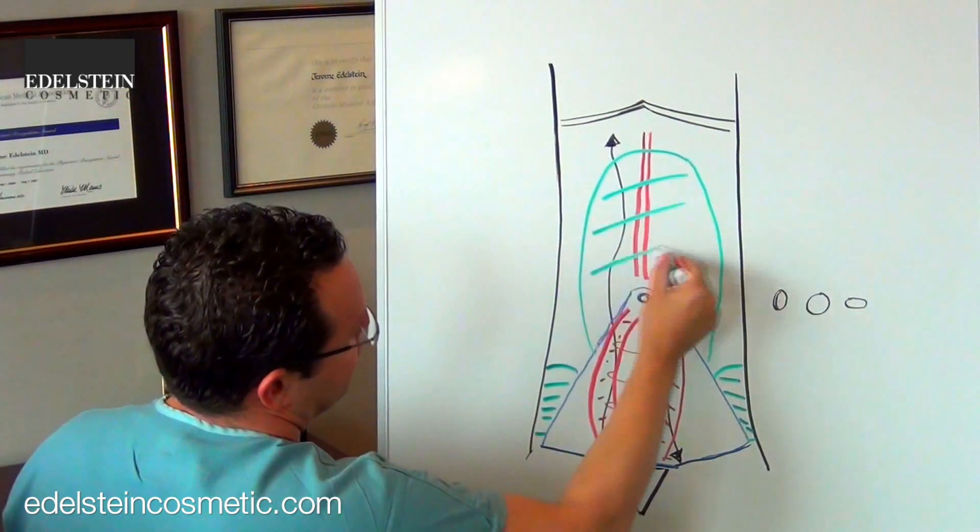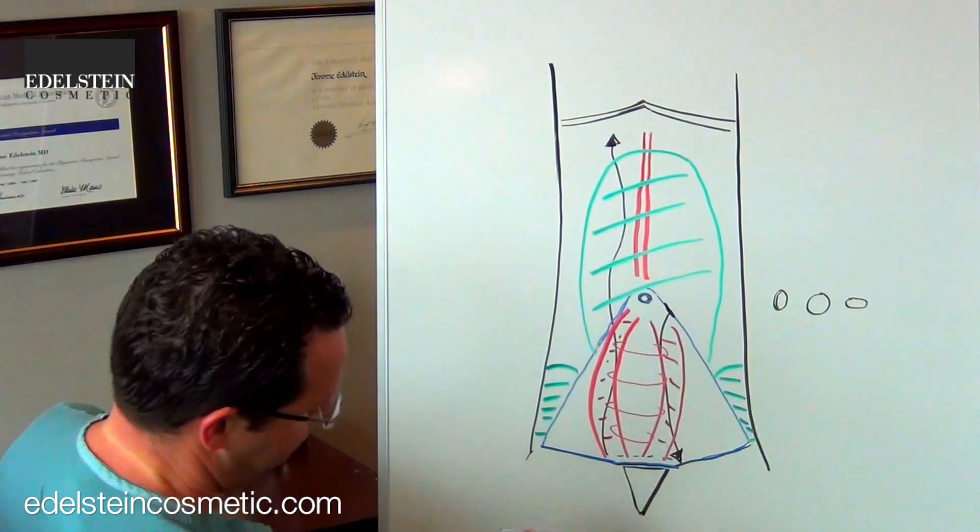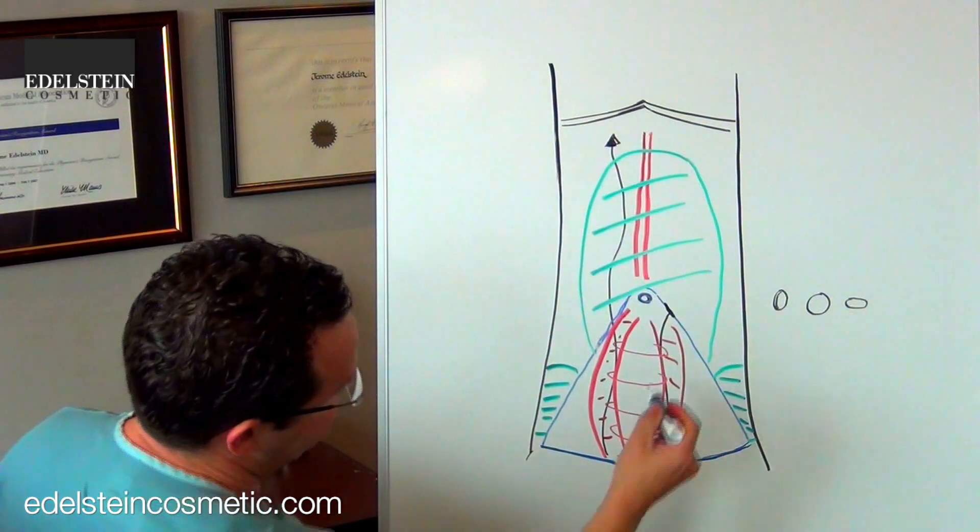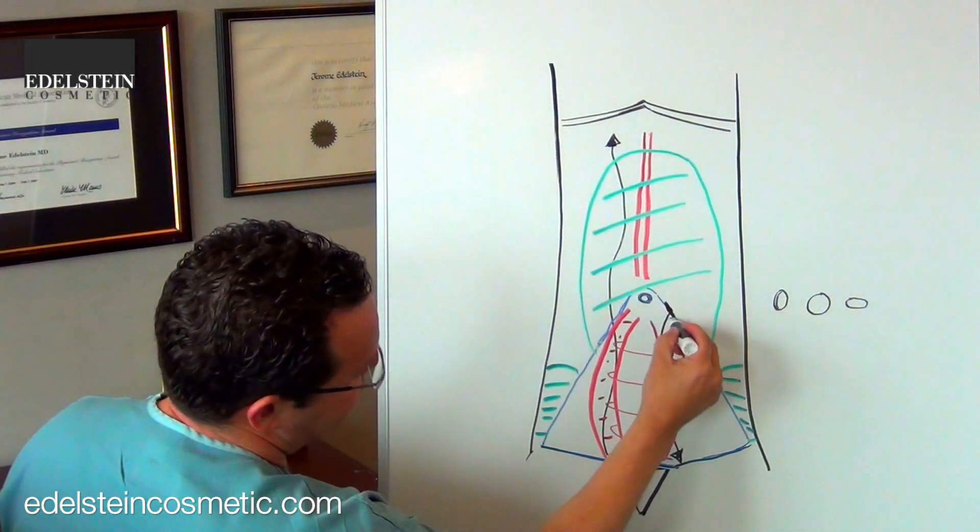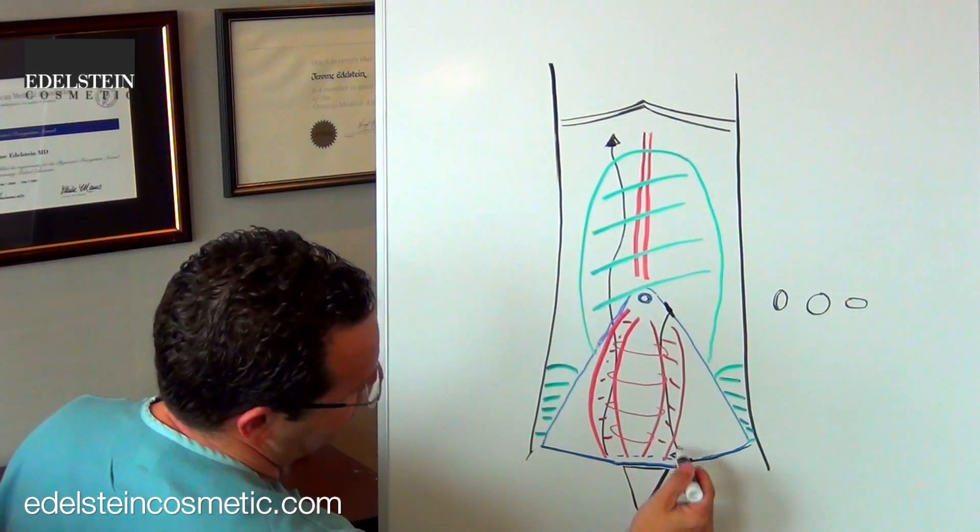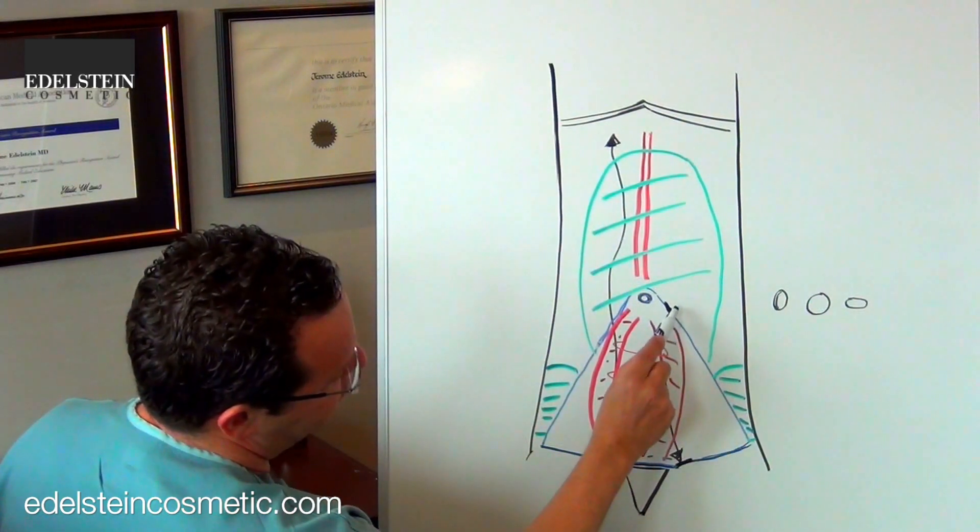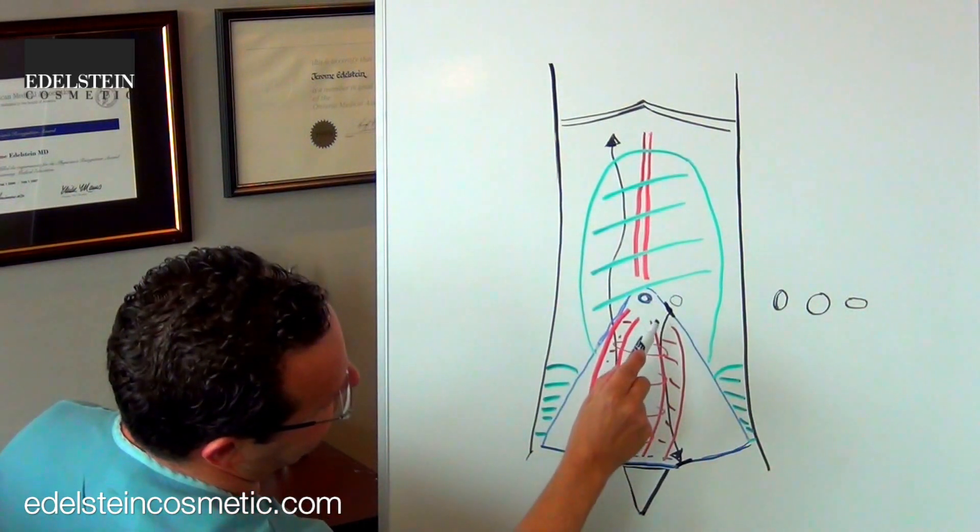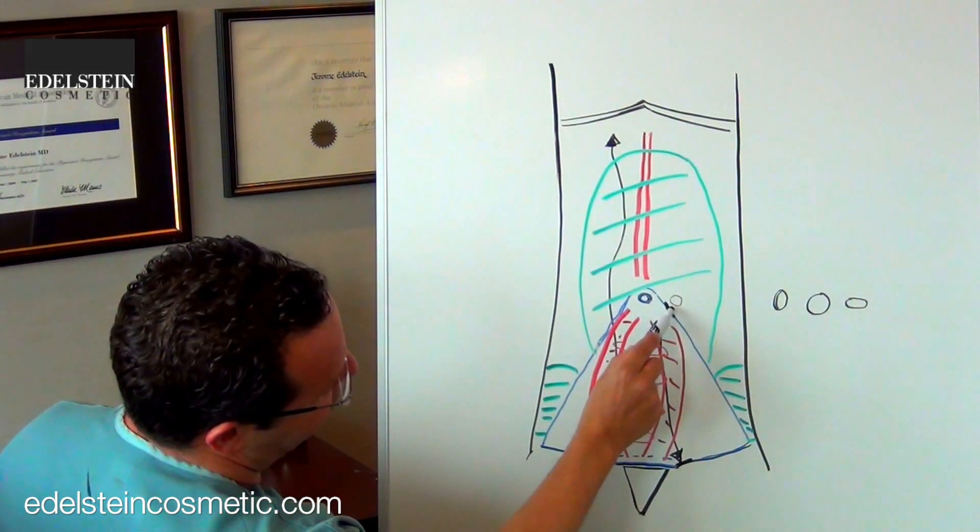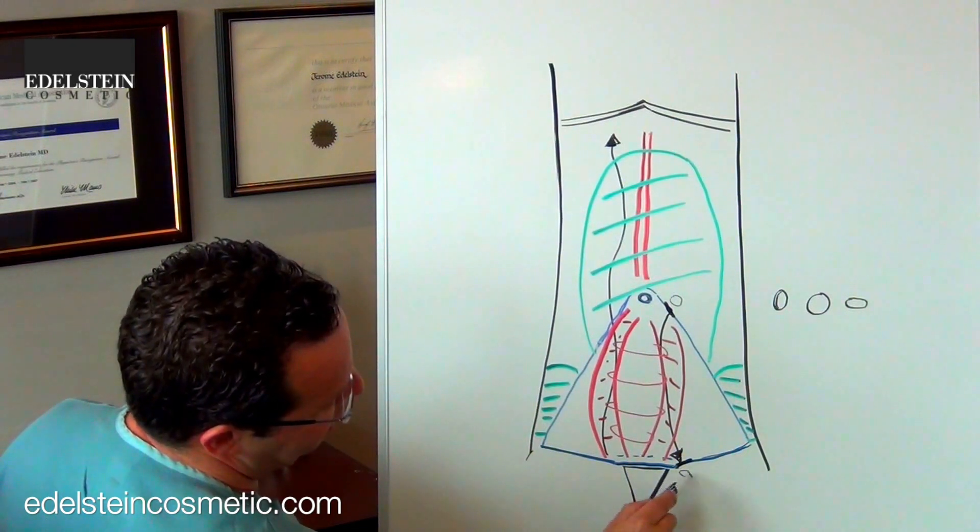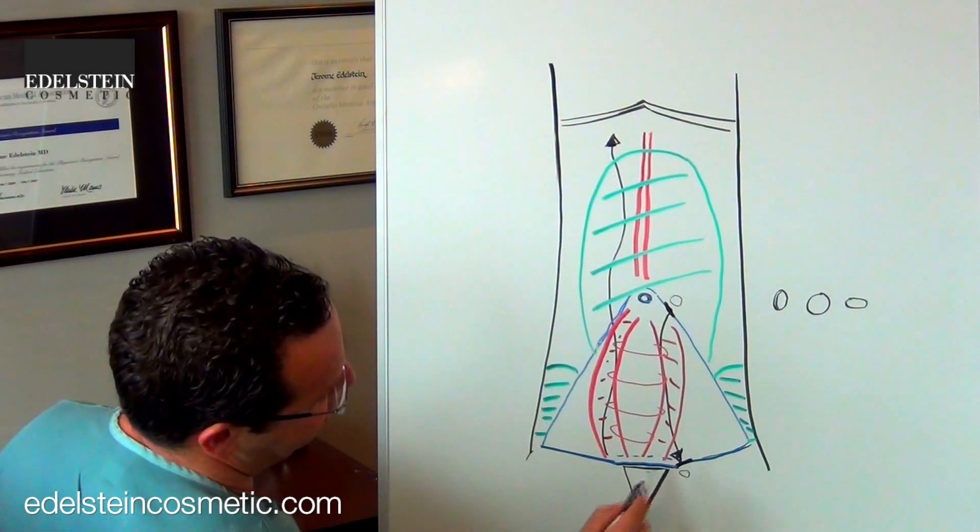I will usually do some liposuction of what's still left here. The reason for this is that this skin edge here is going to be pulled down to this skin edge down there. If you pinch yourself next to the belly button in this area, you're going to see that the skin is very thick. If you pinch yourself down here next to the pubic area, you'll see it's very thin.